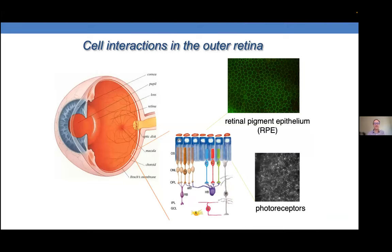These two cell types have been cooperating for half a billion years as partners in vision. Their functions and interactions have evolved to the point where in the mammalian retina they are intimately associated and cooperate in a number of ways — hence the 'assisted living' theme. We've studied a couple of those interactions.